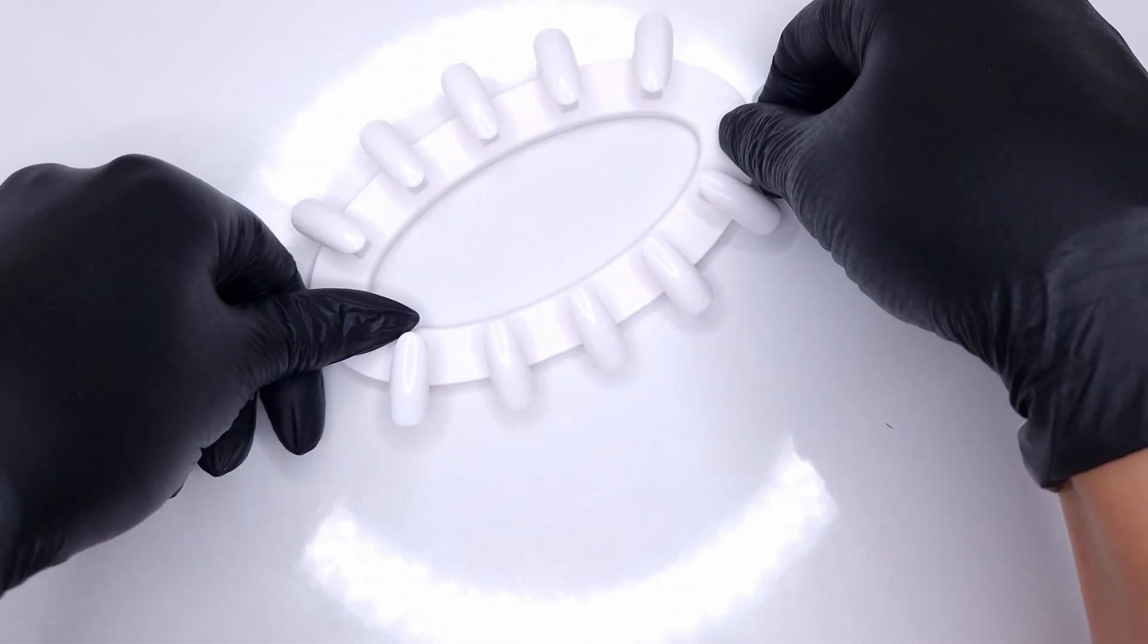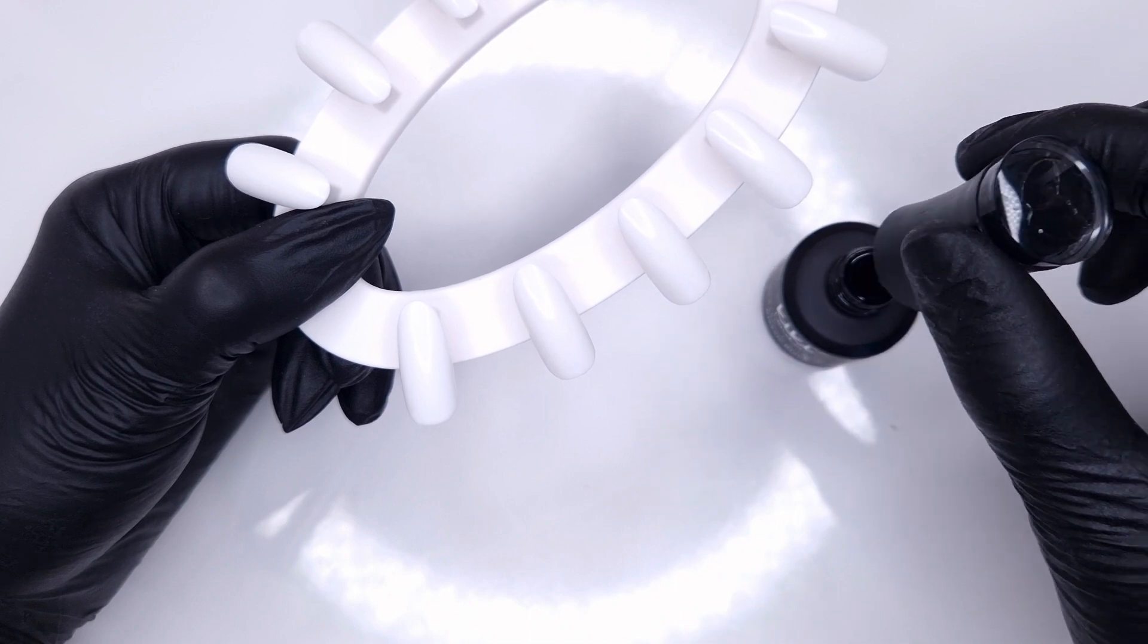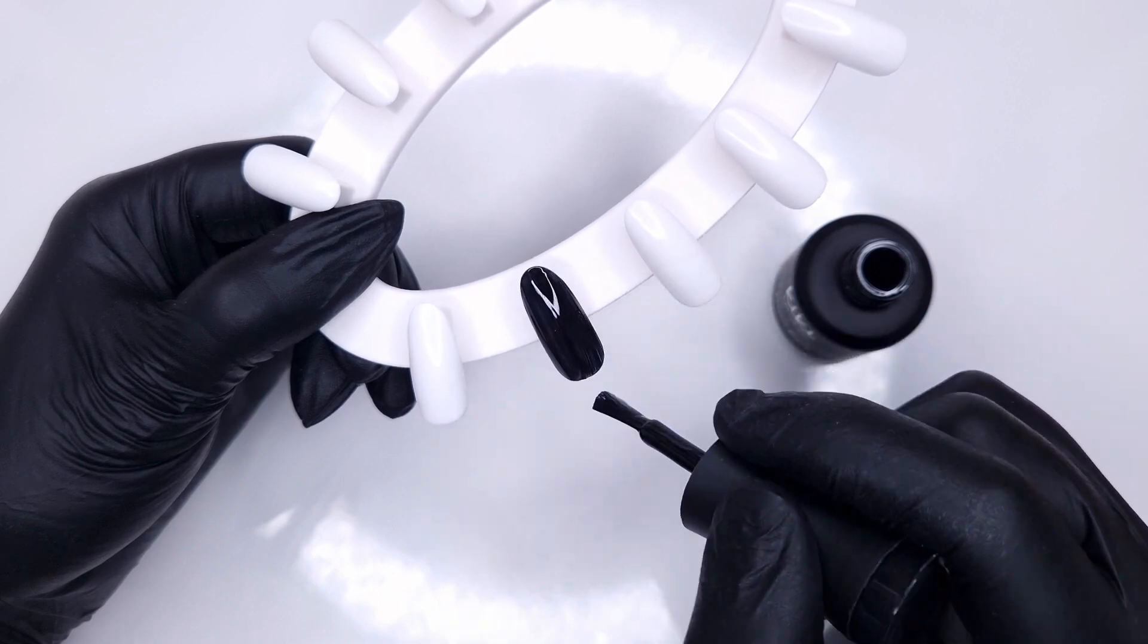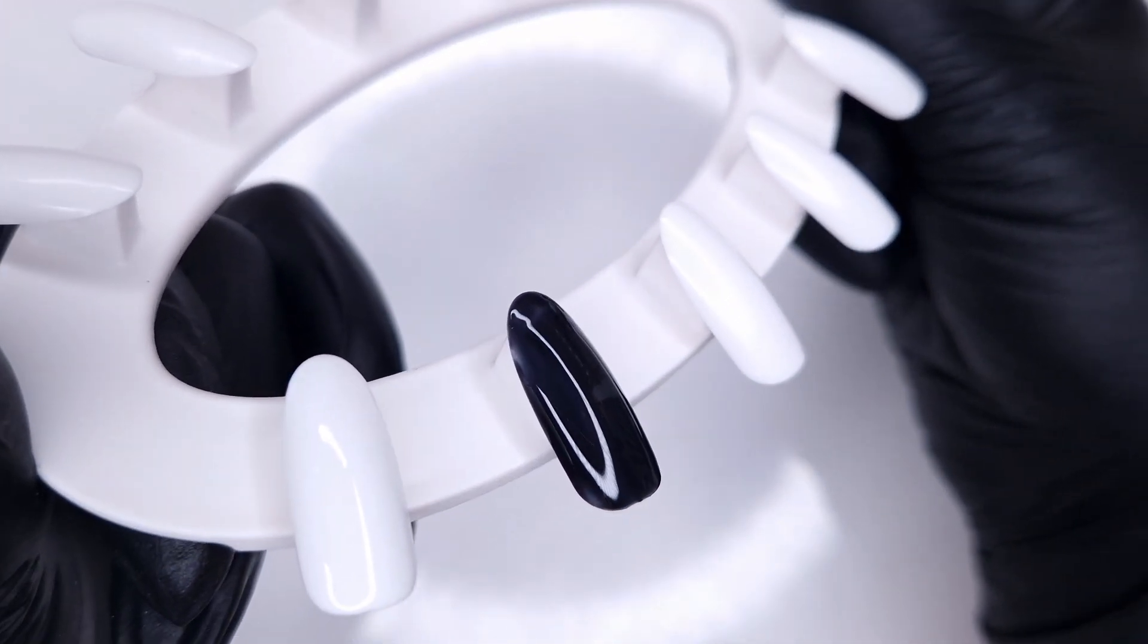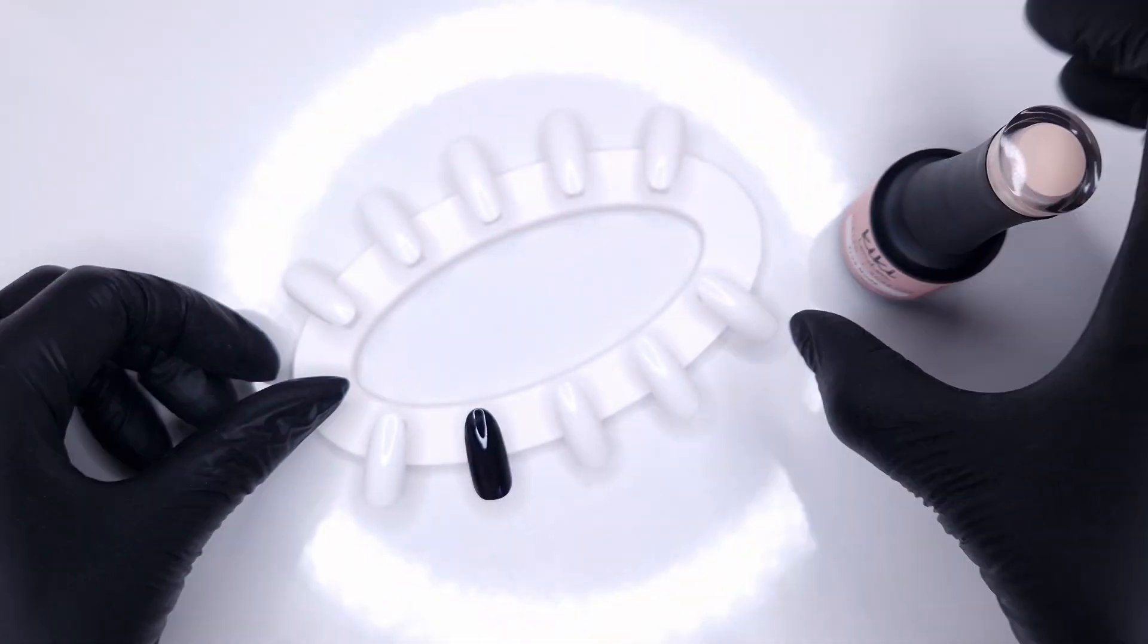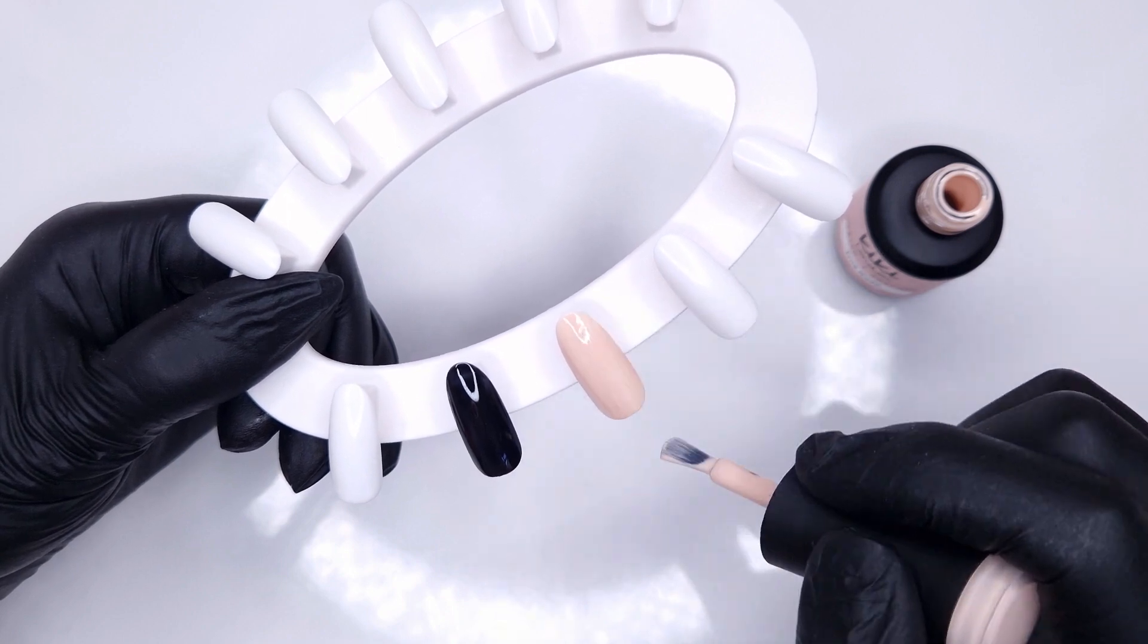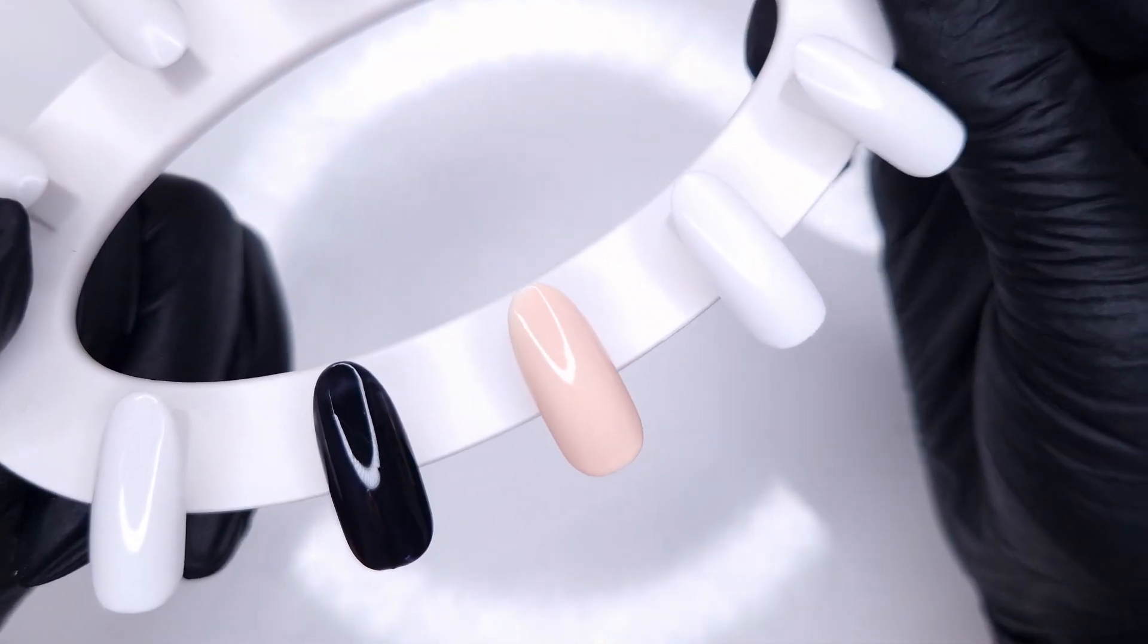So whilst I'm swatching these I thought we would talk about why choose a Hema Free gel polish. One of the main reasons is because a lot of the time if someone has an allergy to gel polish it is the Hema that they're usually allergic to. Now the regular Kiki London line does actually have very low levels of Hema. By removing the Hema from the gel polish formula there is a reduced likelihood of experiencing allergic reactions, things like contact dermatitis and other related skin conditions.